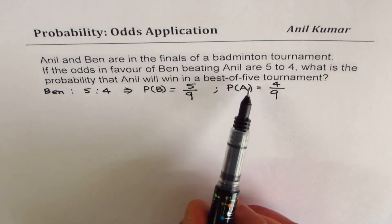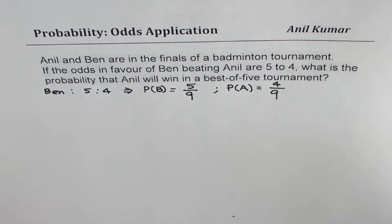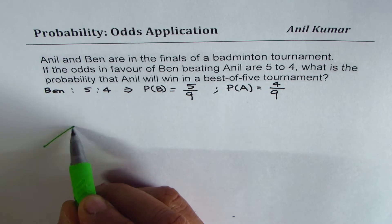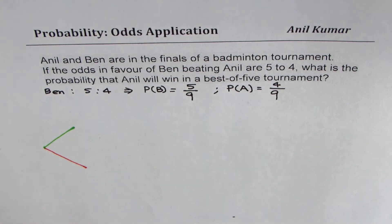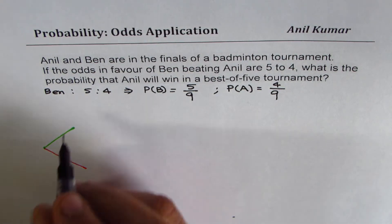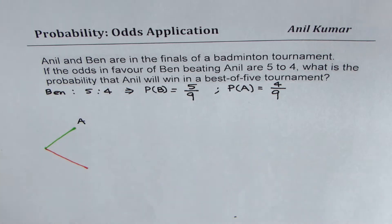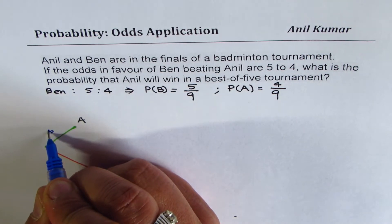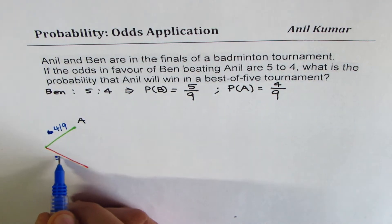Now, in a best of 5, a person will win if that person wins 3 games. So what we will do here is make a tree diagram. So let's say Game 1 — in Game 1, either Anil could win or Ben could win. So we'll go Anil or Ben; these are the two possibilities. If Anil wins, the probability is 4 out of 9.